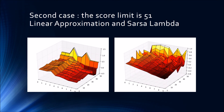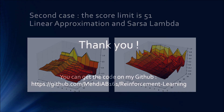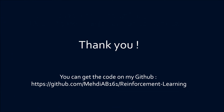Finally, in the second case when the score limit is 51, we can see that the value functions are very similar to the previous ones, but they are a little bit more noisy because we have more states and have more trouble estimating them. Thank you very much and I hope you enjoyed my presentation.